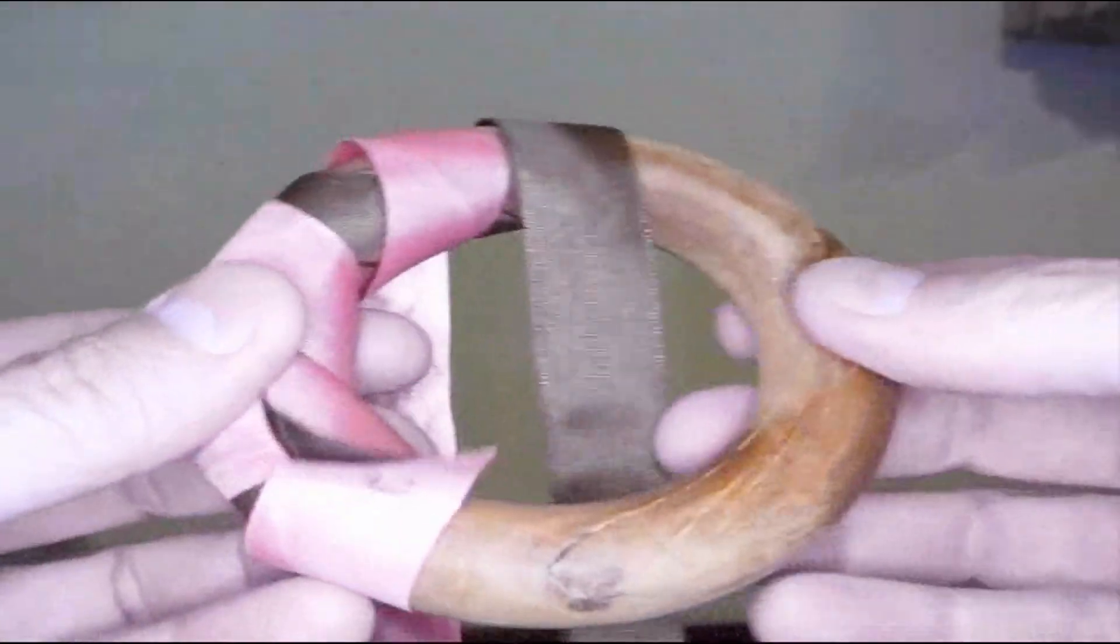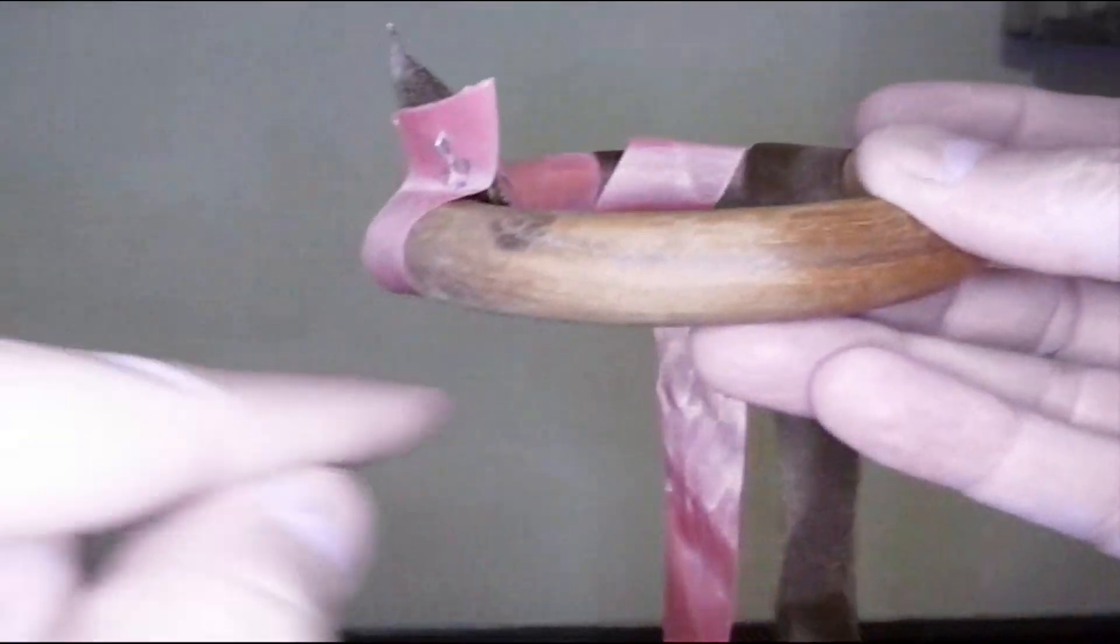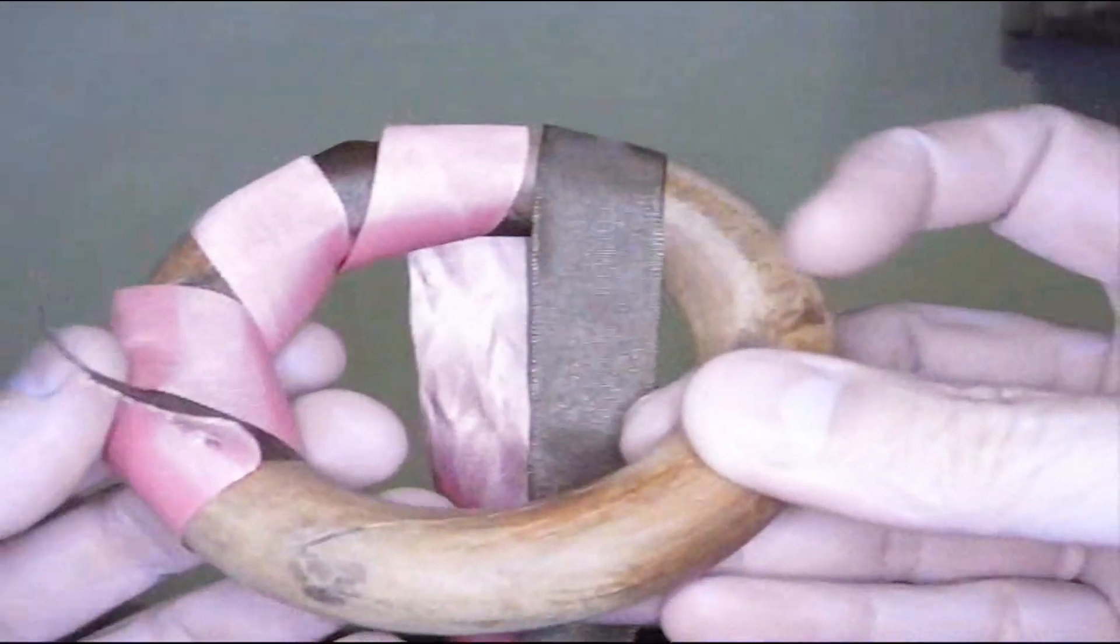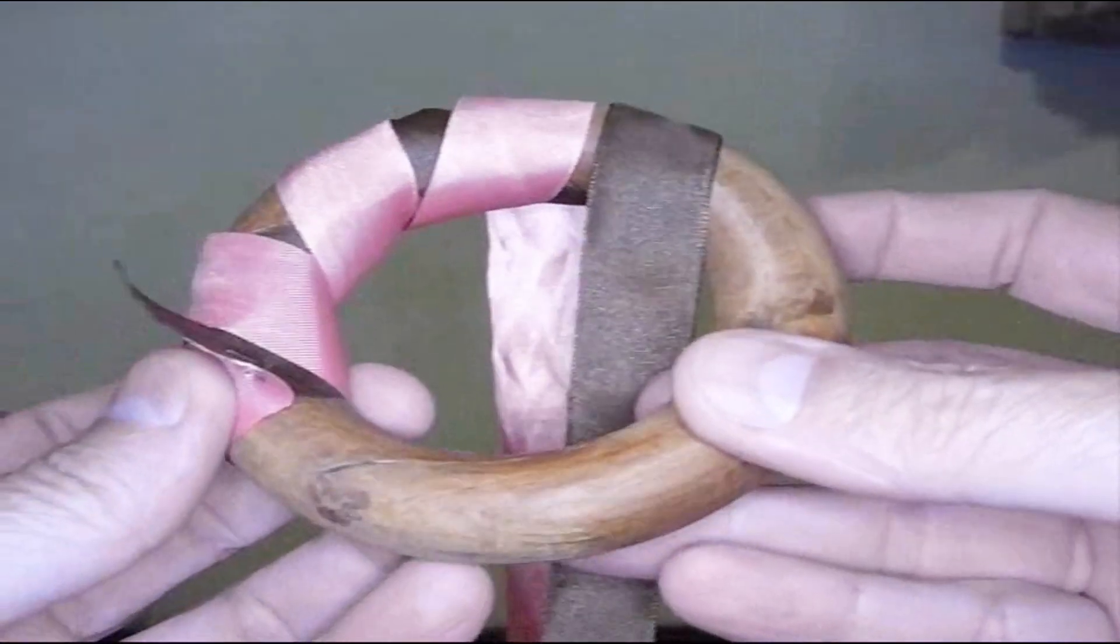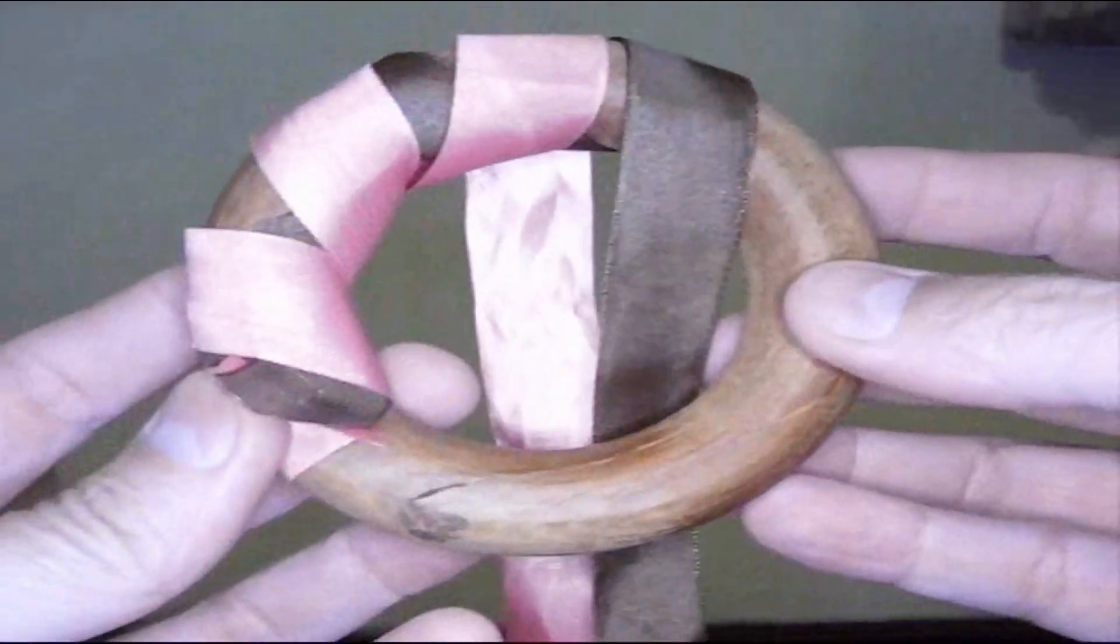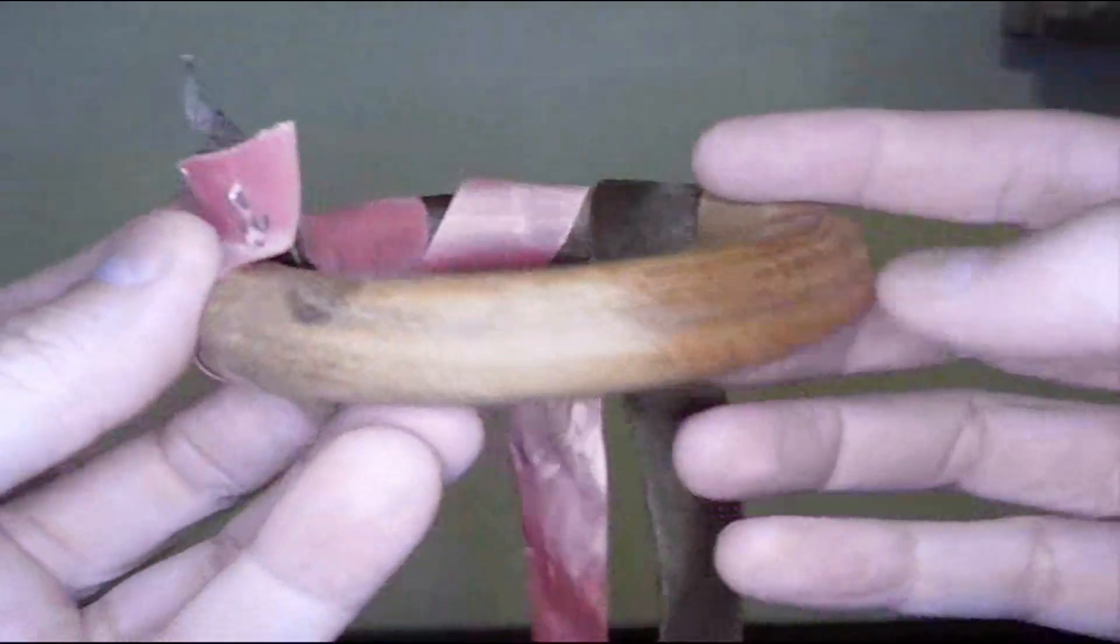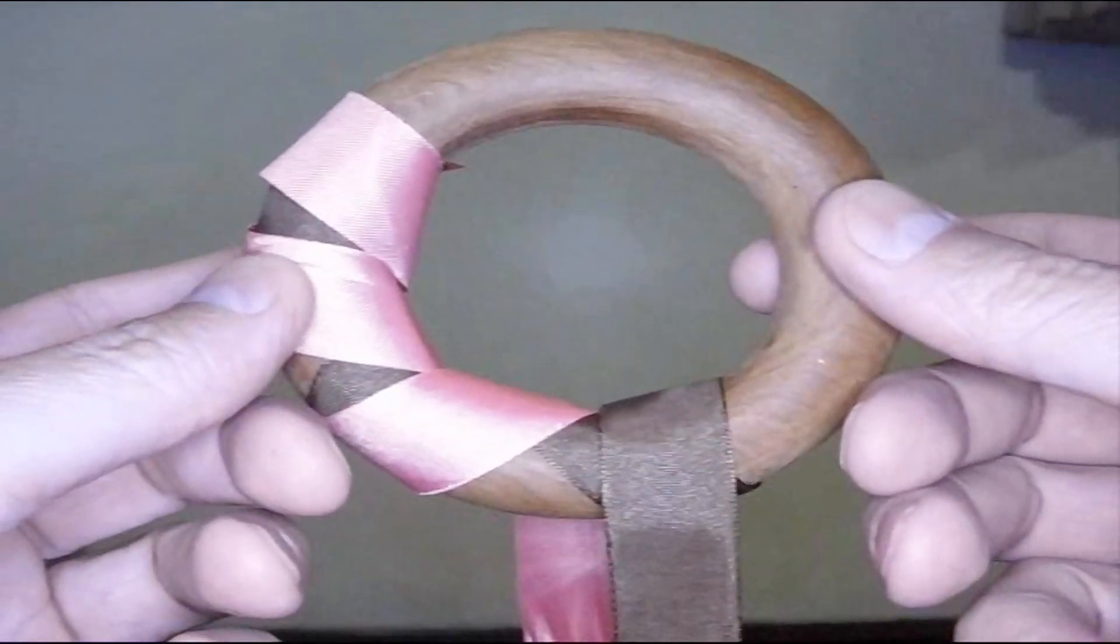And make the number of turns you need to make. And this one is going this direction. Which is counter-clockwise or anti-clockwise. And again make the number of turns you need. And that's it. Those are the two basic ways of winding a toroid coil.